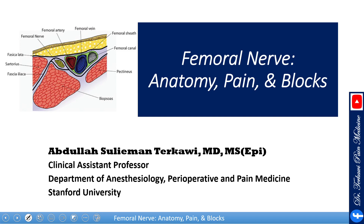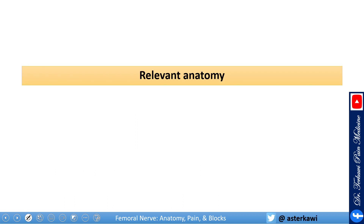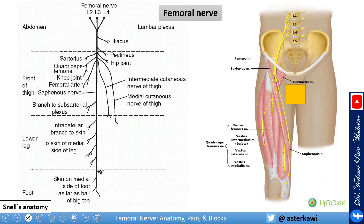Welcome back. In this video I'll talk about femoral nerve anatomy, pain presentation, blocks, and treatment. The femoral nerve originates from the lumbar plexus, namely from L2, 3, and 4, on the posterior abdominal wall, and enters the femoral triangle of the thigh by passing underneath the inguinal ligament.